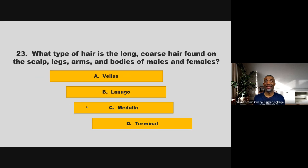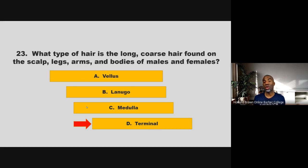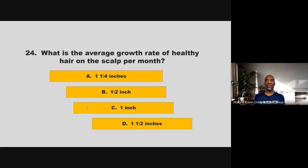What type of hair is the long, coarse hair found on the scalp, legs, arms, and bodies of males and females? Is it vellus, lanugo, medulla, or terminal? If you chose D, terminal, you are correct.